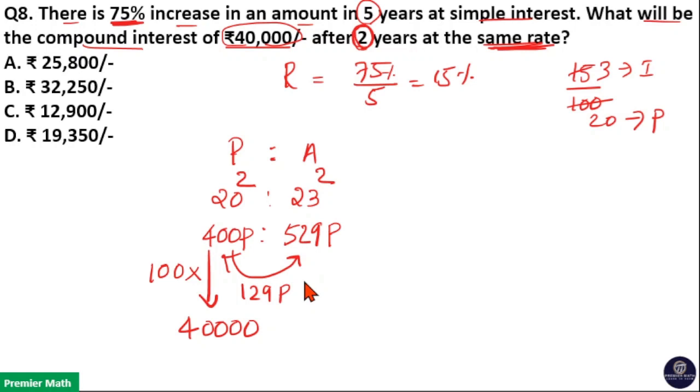If 1 part is equal to 100, then 129 parts is the compound interest. Compound interest is 129 parts, which is equal to 129 times 100. So ₹12,900 is the compound interest for 2 years.